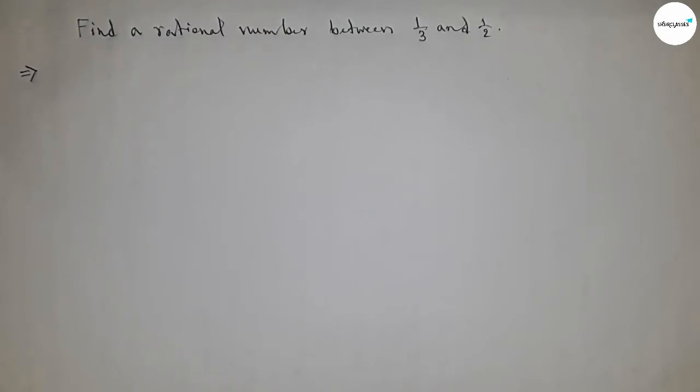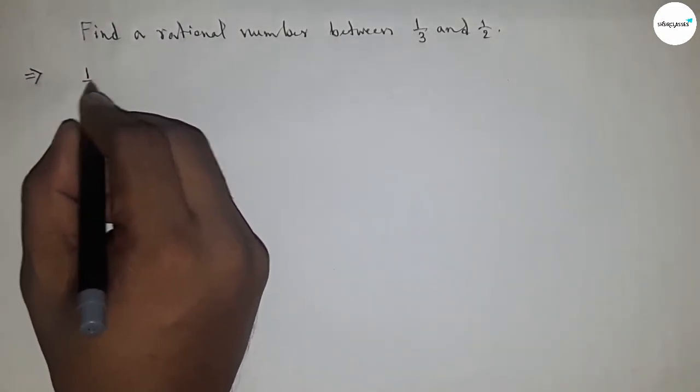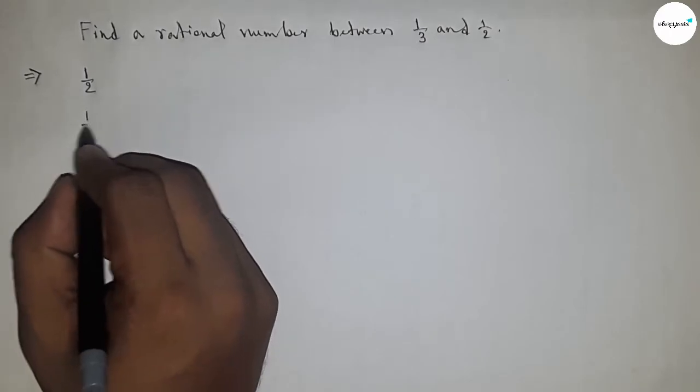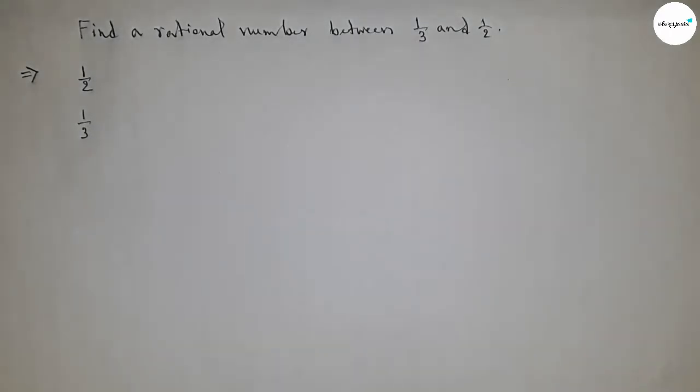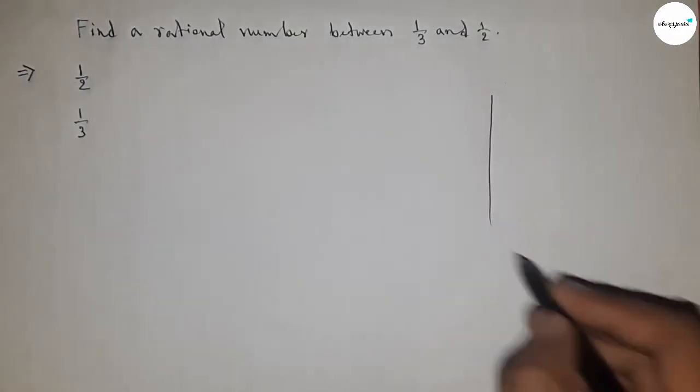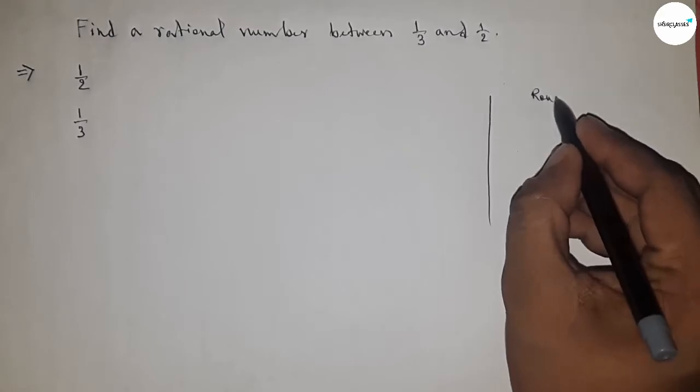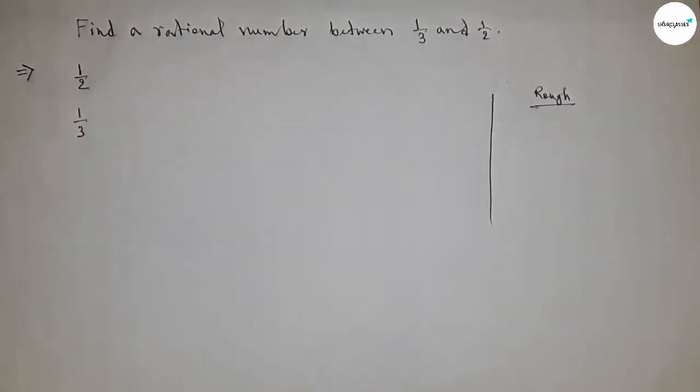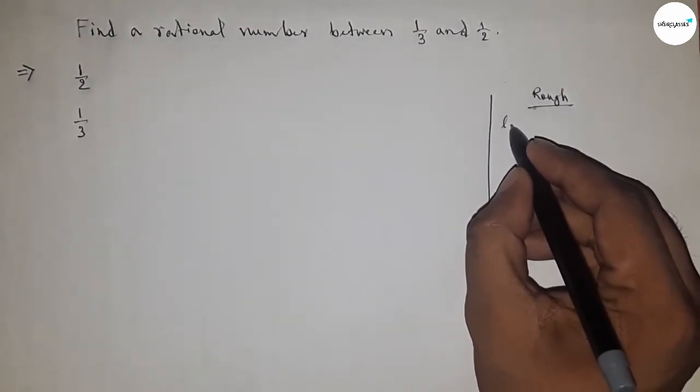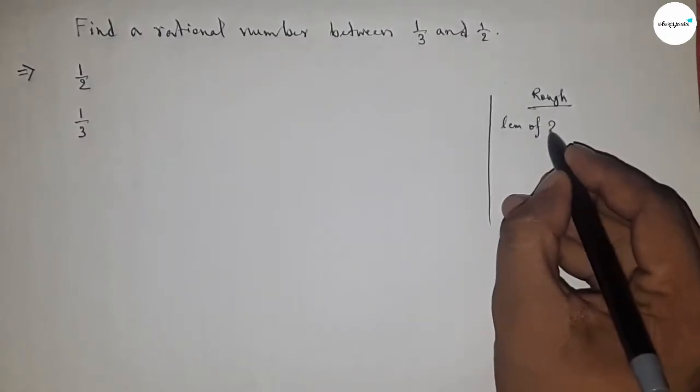First of all, write down the given rational numbers: 1/2 and 1/3. Now, discussing some calculations first - we have to find the LCM of 2 and 3.